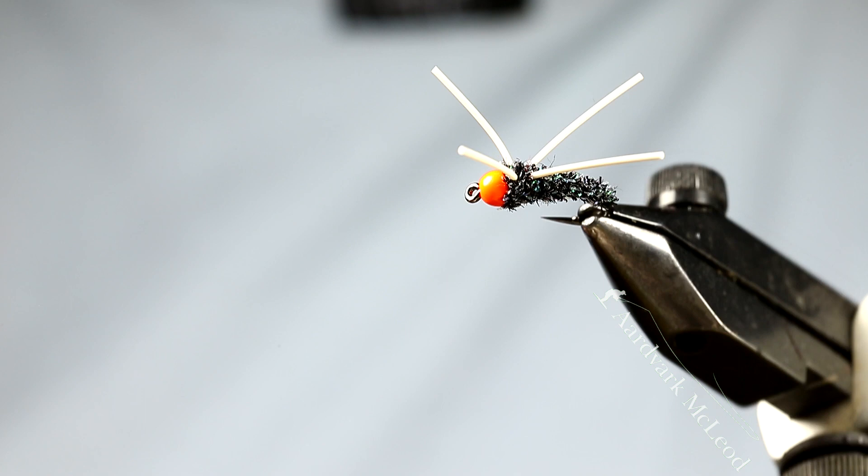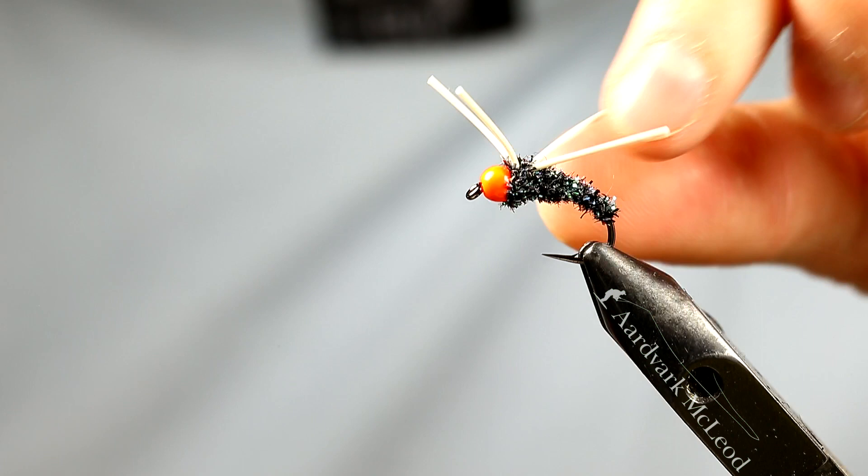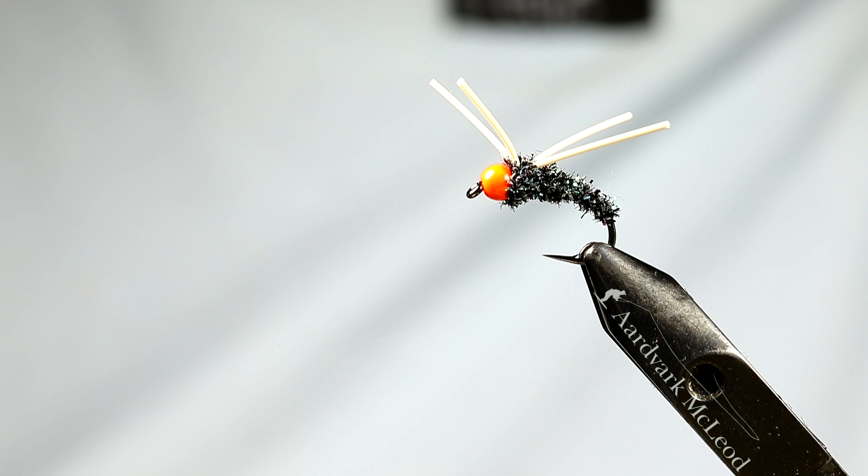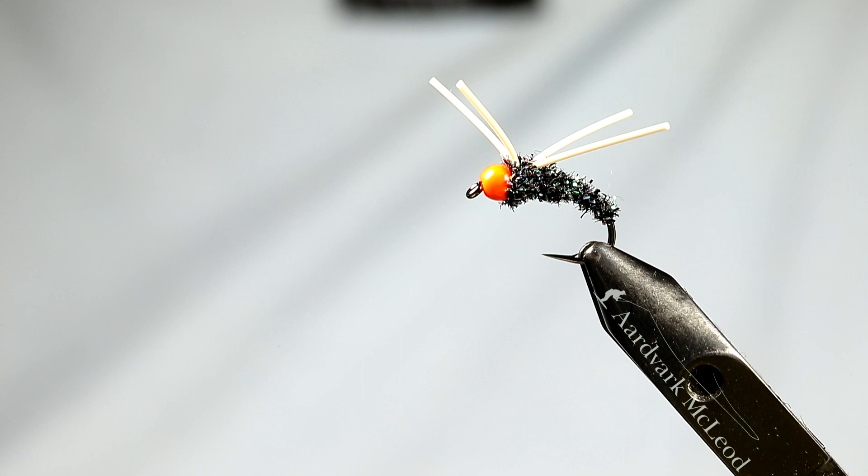But that is basically the fly done. Really is that simple. You can see they literally take a couple of minutes to tie. It's a very effective pattern. Two ingredients, four ingredients if you count the bead and the hook. But you can tie your box full of them very quickly. But a very effective pattern to catch sea trout in Argentina. I hope it brings you luck.